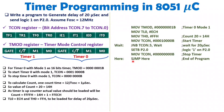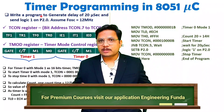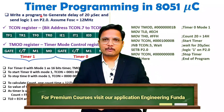This program generates a delay of 20 microseconds — we started the timer, stopped the timer, configured the timer, and calculated the count. This process is what you follow for all programs involving timers and counters. I hope it is clear. If any confusion remains, post it in the comment box — I will be happy to help. Thank you so much for watching this video.